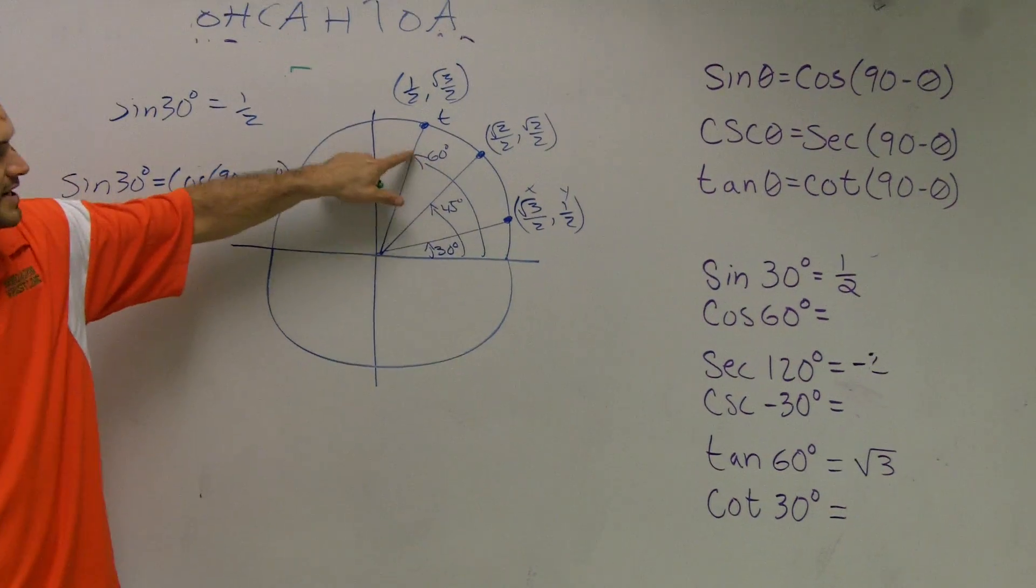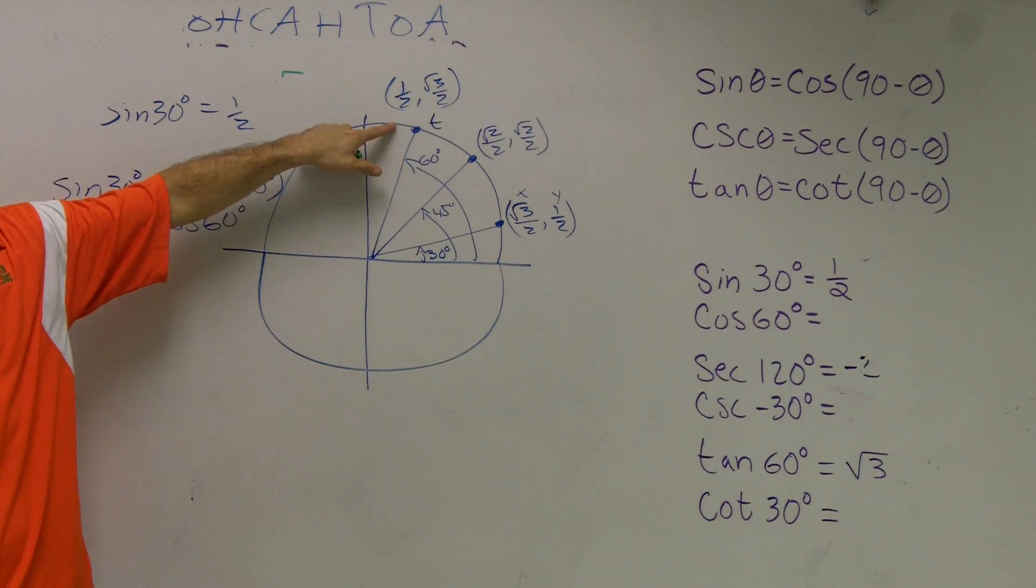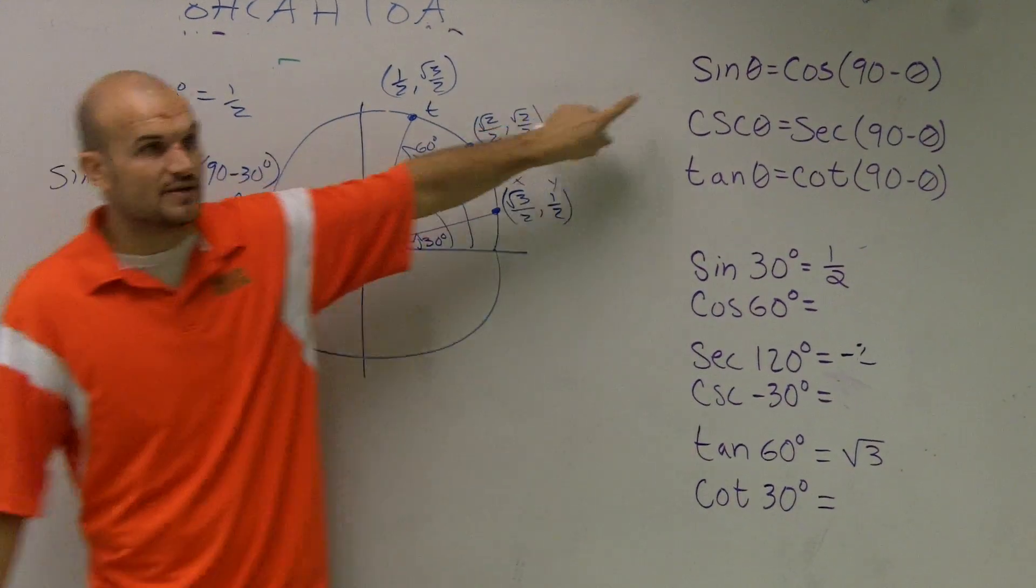I go to 60 degrees. This one. What is cosine? Cosine is the x. What does the x represent? 1 half. Do you guys see how this is true?